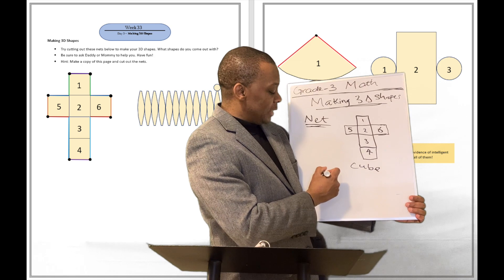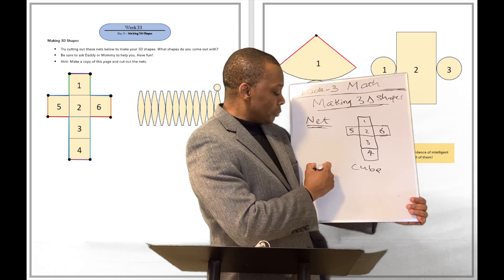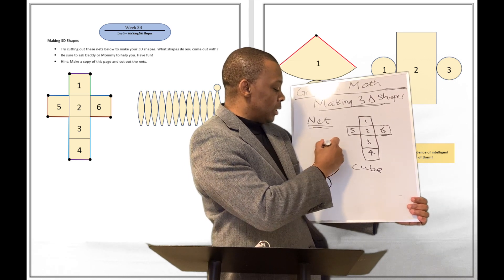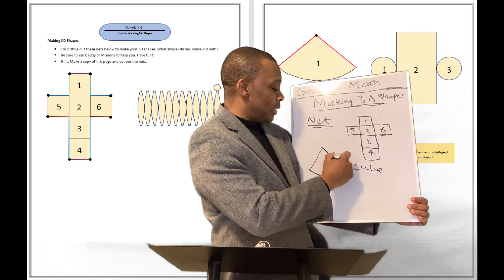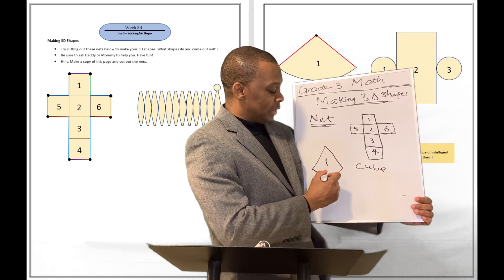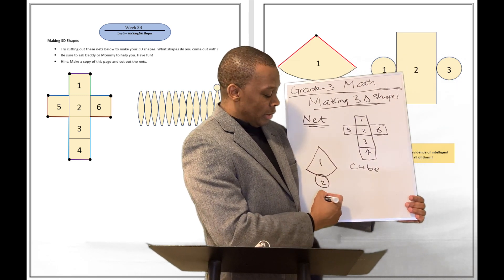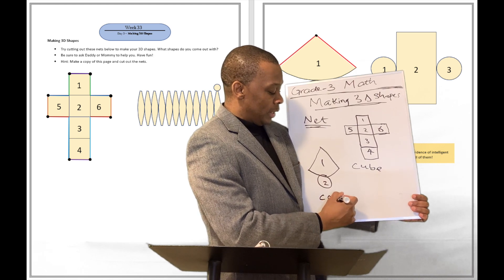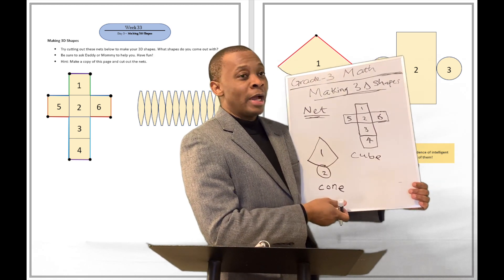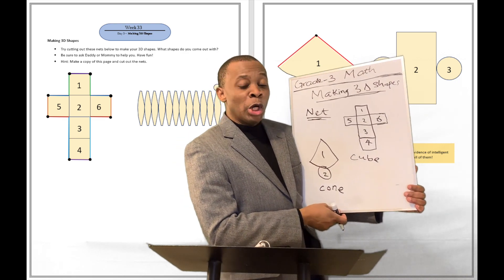Now, what about this net? There's another net that looks like this here, that you can easily cut out. There's one face over here and a second face over there. If you cut this out, you are going to have a cone. That's going to form a cone for you.